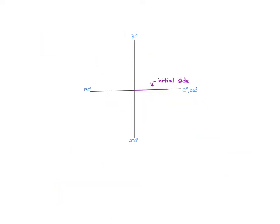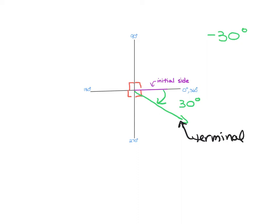Our initial side is that x-axis. Let's say I want to draw a negative 30-degree angle. I'm not going to get out a protractor — I'm just going to estimate where it should be. Each one of these quadrants is 90 degrees, and halfway would be about 45. So if I wanted a negative 30-degree angle, it's probably about here. Negative is going to go clockwise, and your arrow will be hitting the terminal side — that's your stopping point. A negative sign in front of the 30 — this is a negative 30-degree angle.